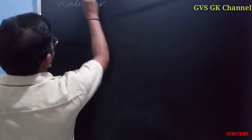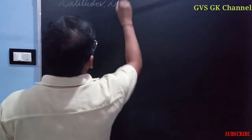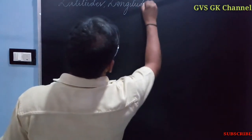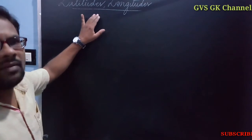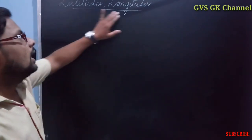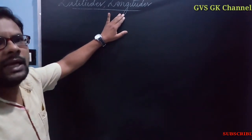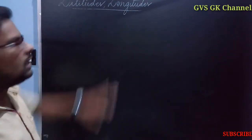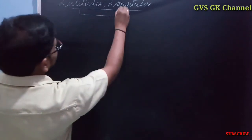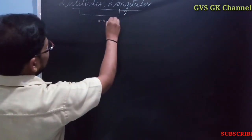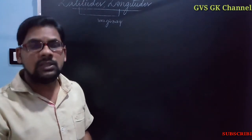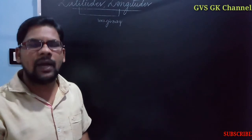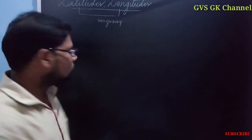Latitudes and longitudes are imaginary lines. The word 'latitude' is derived from the Latin word 'latitudo', and the word 'longitude' is derived from the Latin word 'longitudo'. Being imaginary lines means there are no actual lines on the globe or earth — they were prepared by people or geologists just to locate places on the globe.